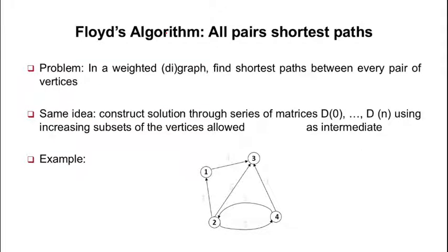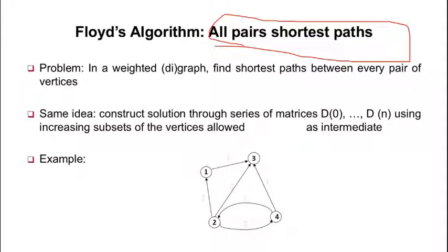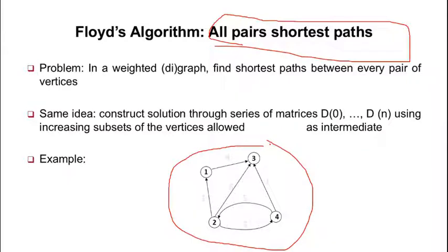Based on the Warshall algorithm we just discussed for finding the transitive closure, there is an algorithm called the Floyd algorithm. For the problem of all-pairs shortest path — meaning all shortest paths — we find the shortest path based on the diagram. We see the same problem with the same diagram, vertices one two three four. The problem: in a weighted diagram, find the shortest path between every pair of vertices.